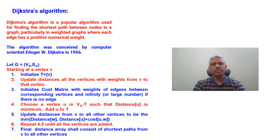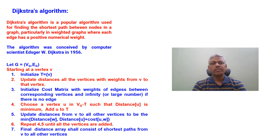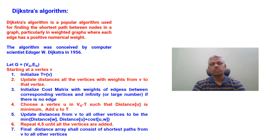We then iteratively update the cost matrix and distances by choosing one vertex at a time. Choose a vertex u from (Vg minus T) — where Vg is the set of all vertices in the graph and T currently consists of singleton v — selecting the vertex with the minimum distance among all such vertices. Add u to T.